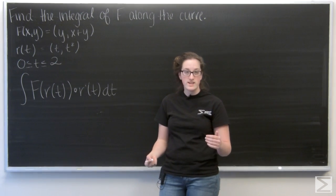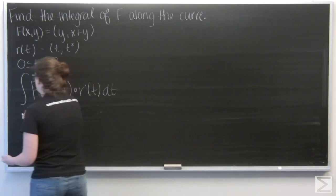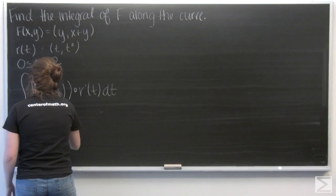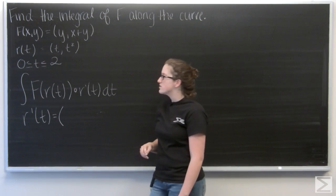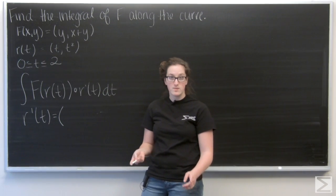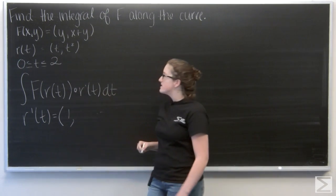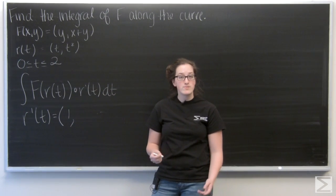I'm just going to differentiate each term with respect to t. So the first term is t, so that's going to become 1. And then the second term, t squared, is going to become 2t.